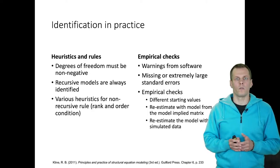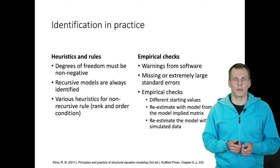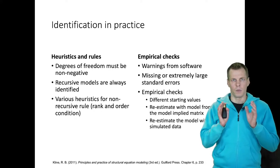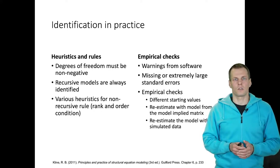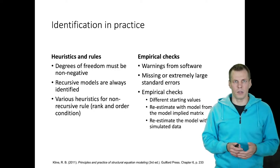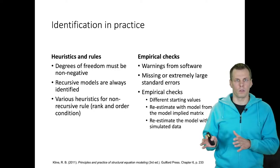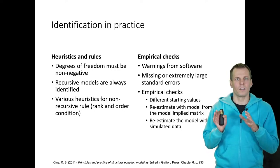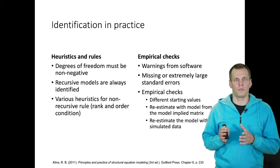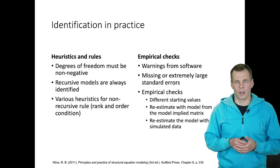The bulletproof way of establishing that your model is identified is to simply prove that you can solve the model parameters from known population covariances. However, this is really tedious to do and can be challenging if you have never done it.